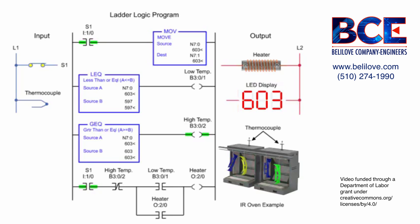To control the circuit, S1 is programmed in the heater output circuit. Addressed to the MOVE instructions is a thermocouple that provides an analog value of the temperature. The temperature is moved from the source to the destination when S1 is activated and is displayed on the LED panel.